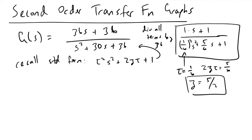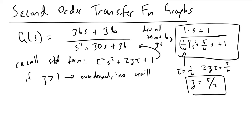As we recall from previous videos on second order transfer functions, if zeta is greater than one, it means that our system is overdamped, and therefore will not exhibit oscillations — so no oscillations in our graph.